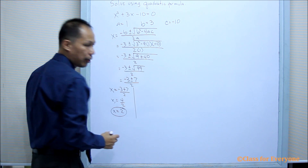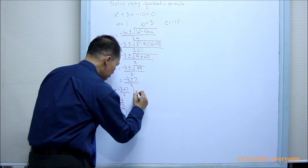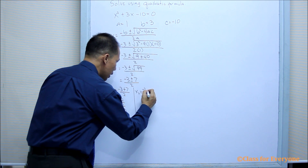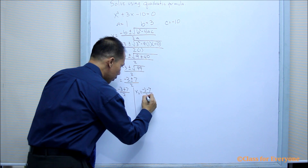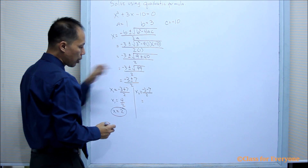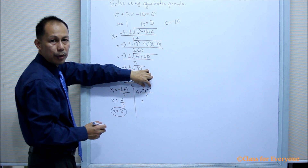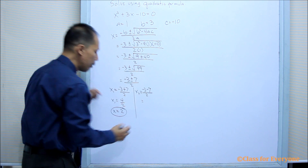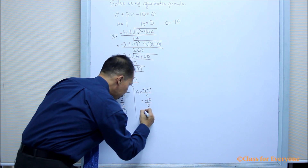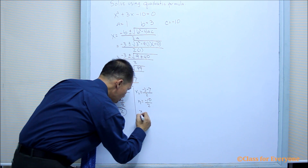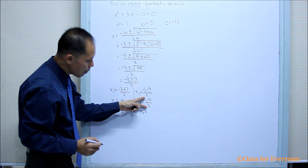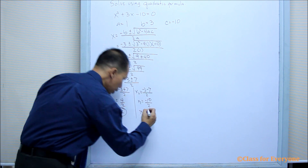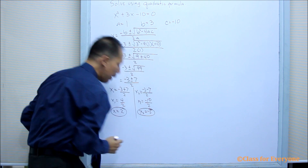For the second root, x₂, we'll have negative 3 minus 7, all over 2. Getting the sum of the numerator gives us negative 10 over 2. The simplified form of negative 10 over 2 is negative 5.